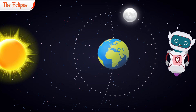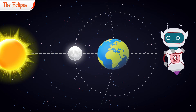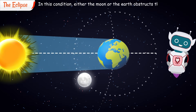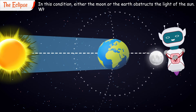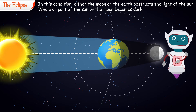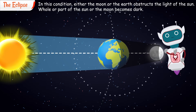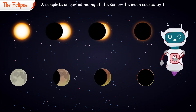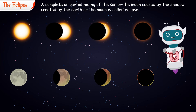In some way, the Earth, Sun, and Moon are in the same exact straight path. In this condition, either the Moon or the Earth blocks the light of the Sun, so the whole or part of the Sun or Moon becomes dark. A complete or partial hiding of the Sun or Moon caused by the shadow created by the Earth or Moon is called an Eclipse.